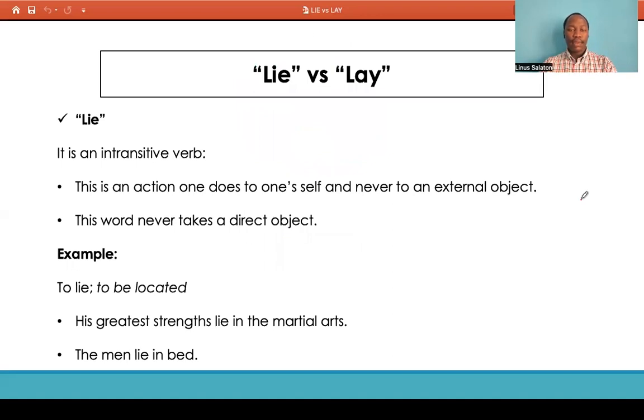Lie is a transitive verb that is an action that one does to oneself and never to an external object. For example, you'd say his strengths lie in martial arts, or the men lie in bed. So basically, these words never take a direct object.